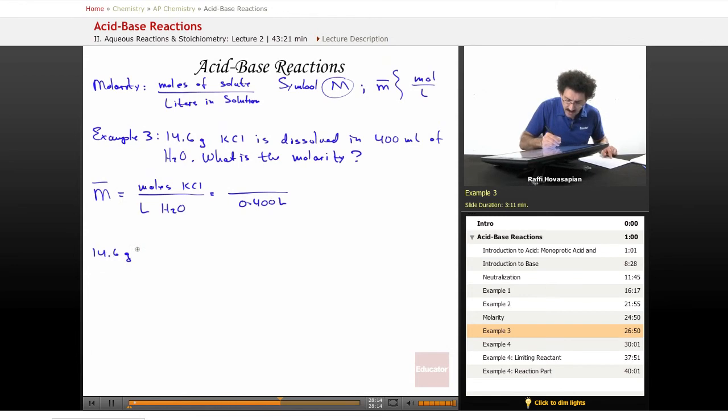14.6 grams of KCl times one mole—it weighs 74.55 grams. When you do that division, you get 0.1958 mole of KCl. This is the number that goes in the numerator.